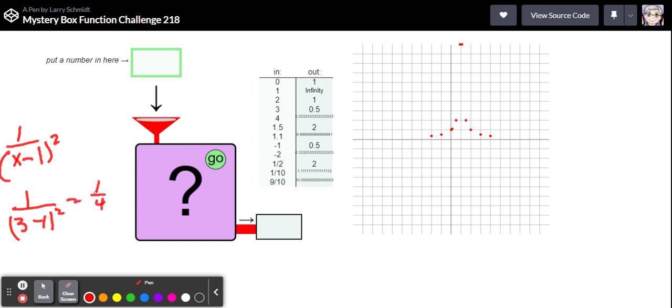So three should give us one-fourth but we're not getting that, we're getting point five so it's not squared. So what else could do that besides squaring? The squaring has the function of making everything positive.